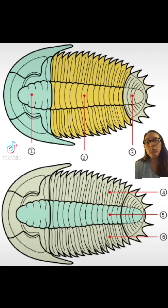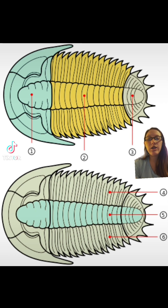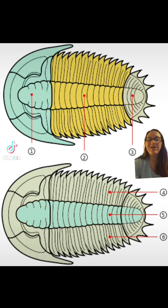The name trilobite means three lobes, and it's in reference to the three lobes that make up its body. It also has three segments, so it just likes the threes. They were made for threes.